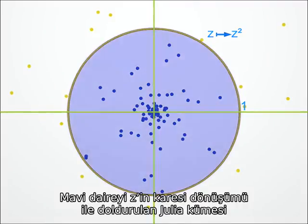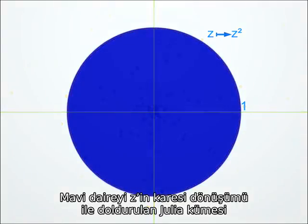One says that the blue disc is the filled-in Julia set of the transformation Z-squared.